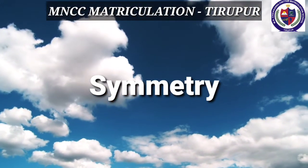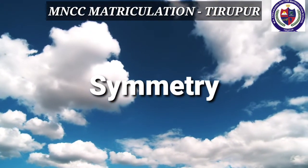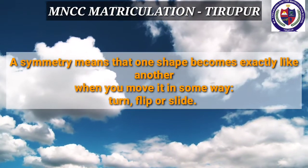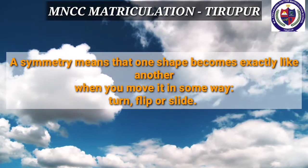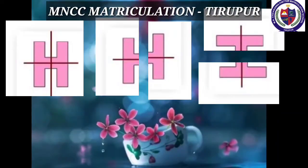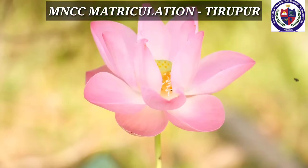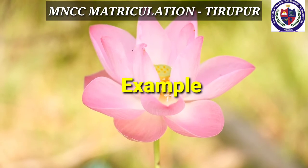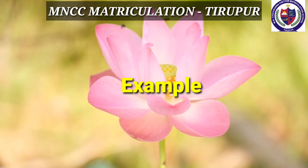Let us learn our last topic: symmetry. The word symmetry means the given shape is exactly like another. See the given picture: here, the letter H is cut, flipped, and rotated, but it is similar to the original letter H. This is called symmetry. Let us see another example for symmetry.